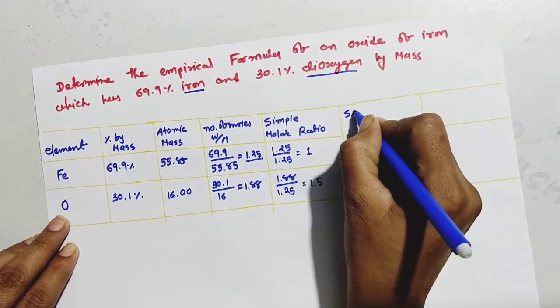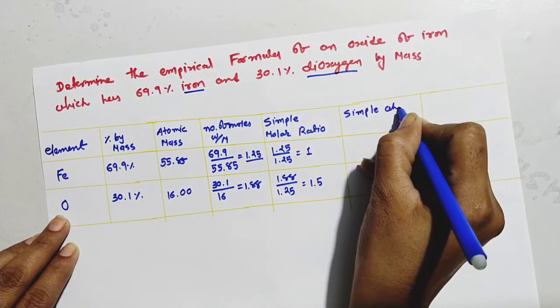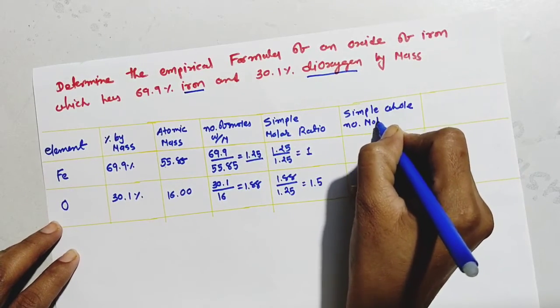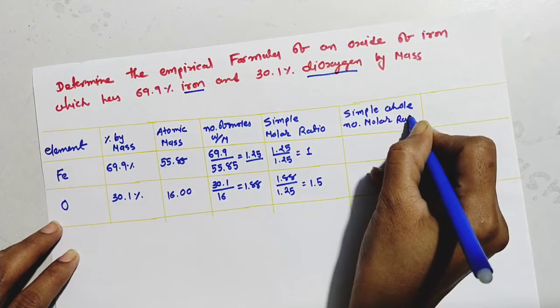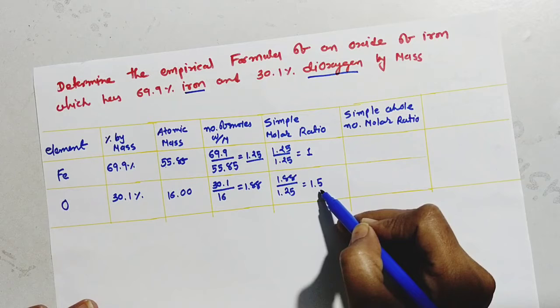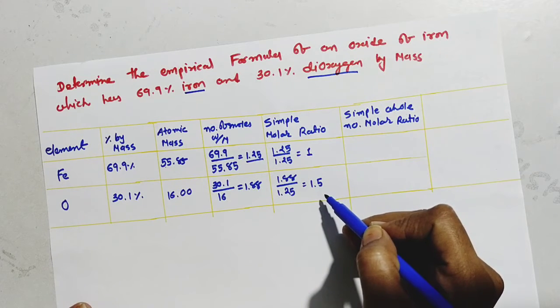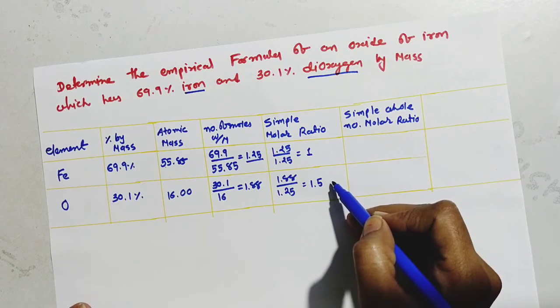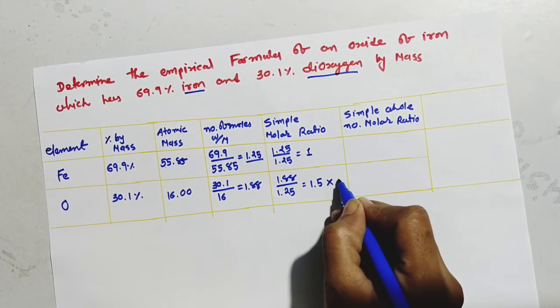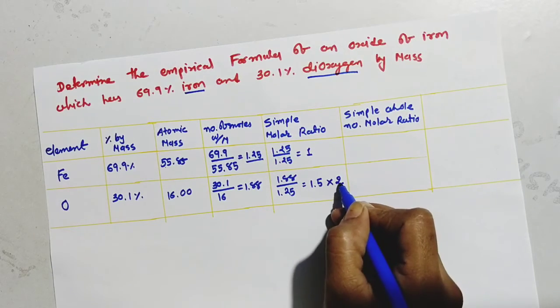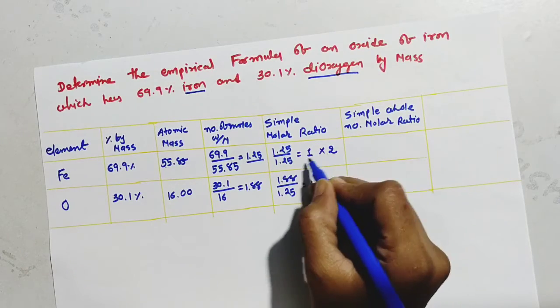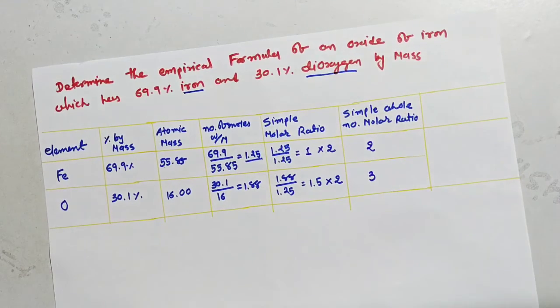And simple whole number molar ratio. See students, here we will get 1 and 1.5. So, fraction mein toho hum likh nahi sakte. So, kya karna hai ha mein? We have to multiply a higher digit. 1.5 ke baad kya aata hai? 2. So, we have to multiply by 2. Isko 2 se multiply kiya. So, isko bhi 2 se multiply karna padhe ga. So, 2 and its answer is 3.